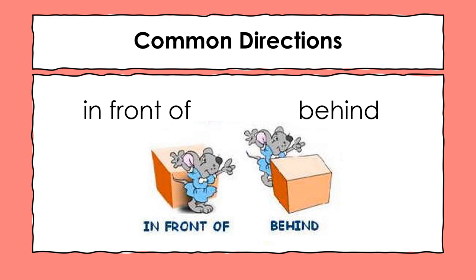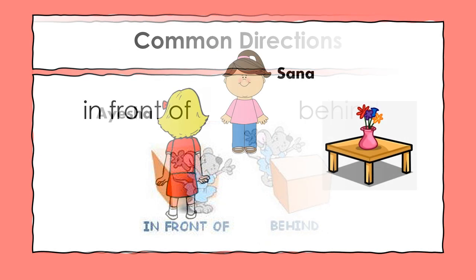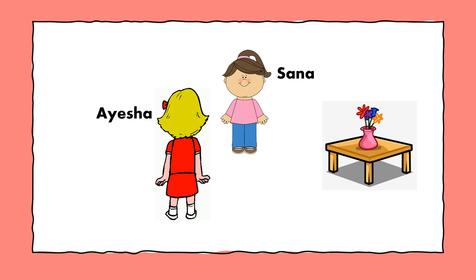Sometimes these commonly used directions can create confusion when people are standing in opposite directions — their left and right changes. For example, in this room there are two girls, Aisha and Sana, and a table. If we ask Sana about the placement of the table, she will say the table is on her left. However, if we ask Aisha, she will say the table is on her right. So you can see the confusion that has been created.